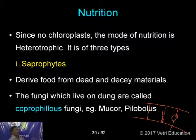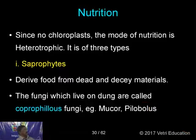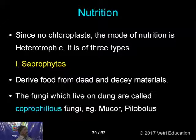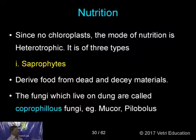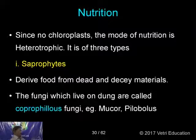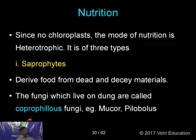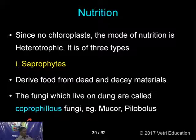Let us see the nutrition in Fungi. We know there is no chloroplast, so the mode of nutrition is heterotrophic, and it is of three types. First, saprophytic nutrition — they derive food from dead and decaying materials. The fungi which live on dung are called coprophilous fungi. Among saprophytic fungi, coprophilous fungi live on dung — example: Mucor and Pilobolus.